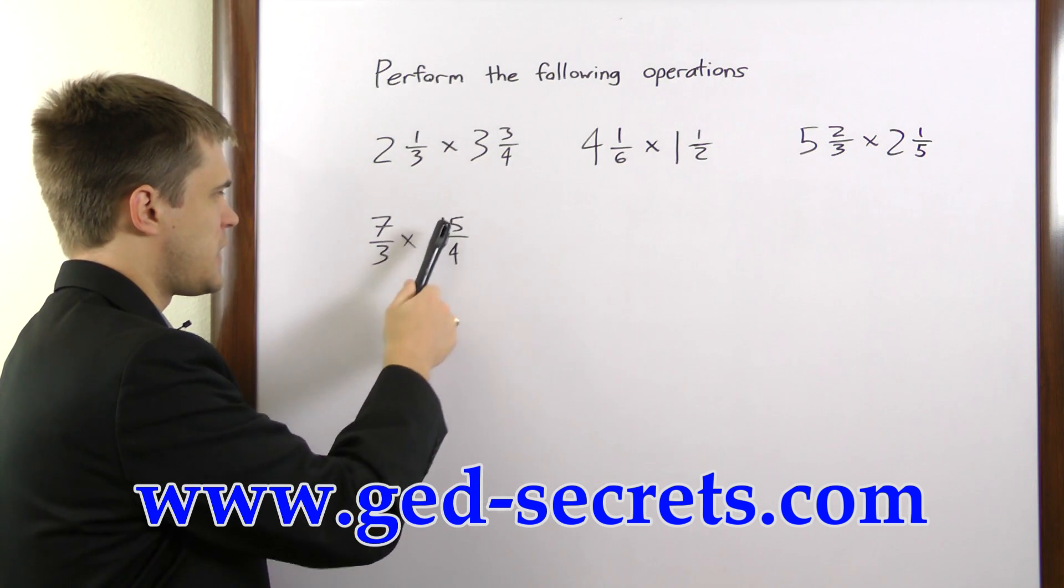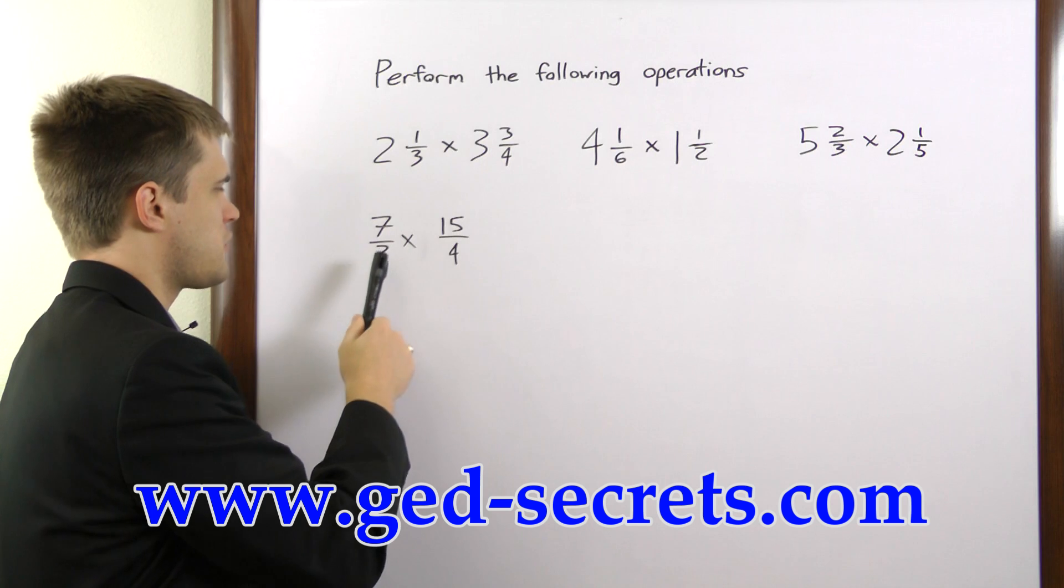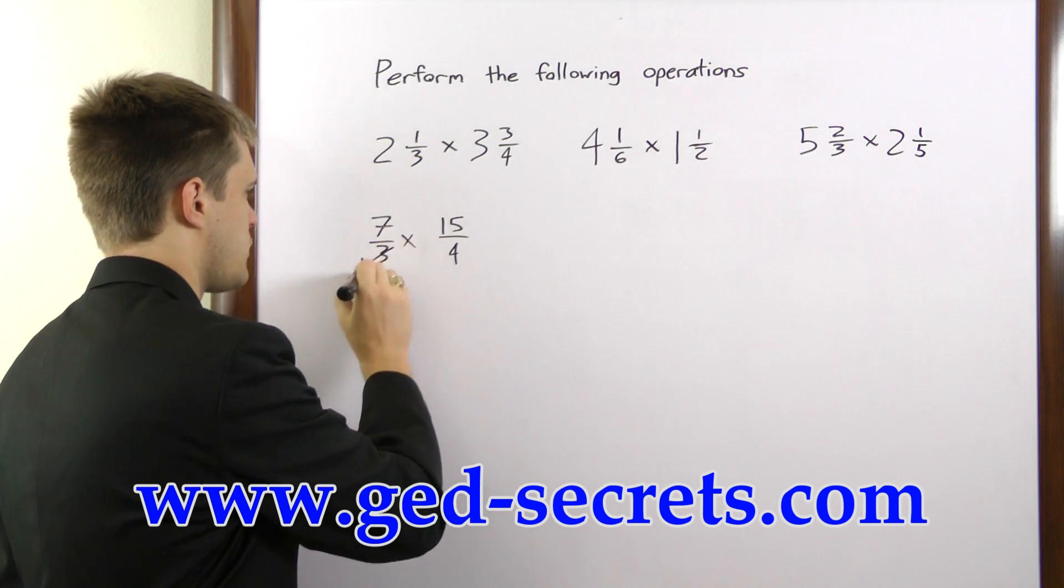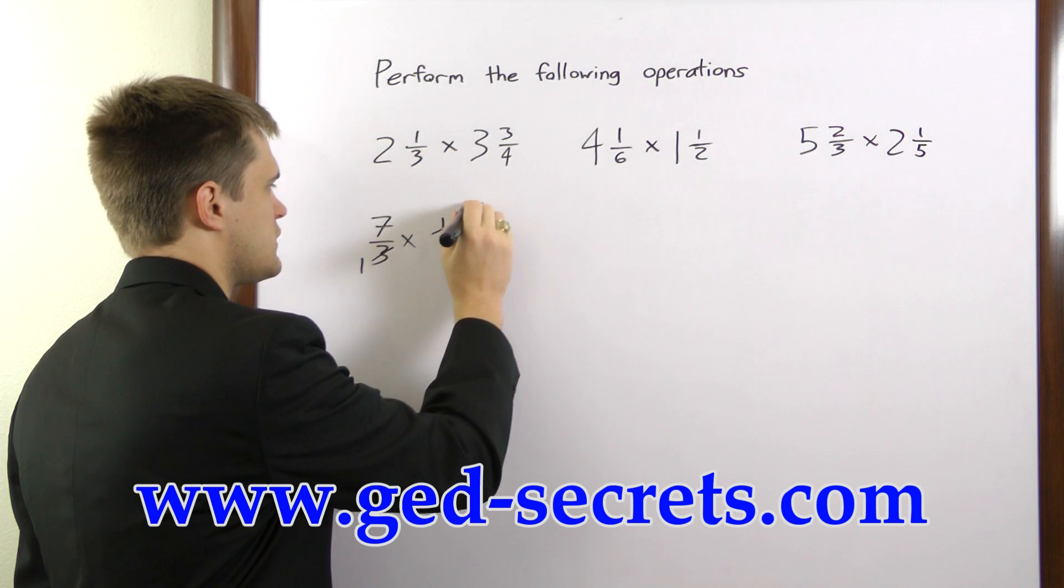Now, if you look at these two, you see that we can cancel the 15 and the 3. If we divide both numbers by 3, 3 over 3 is 1, 15 over 3 is 5.